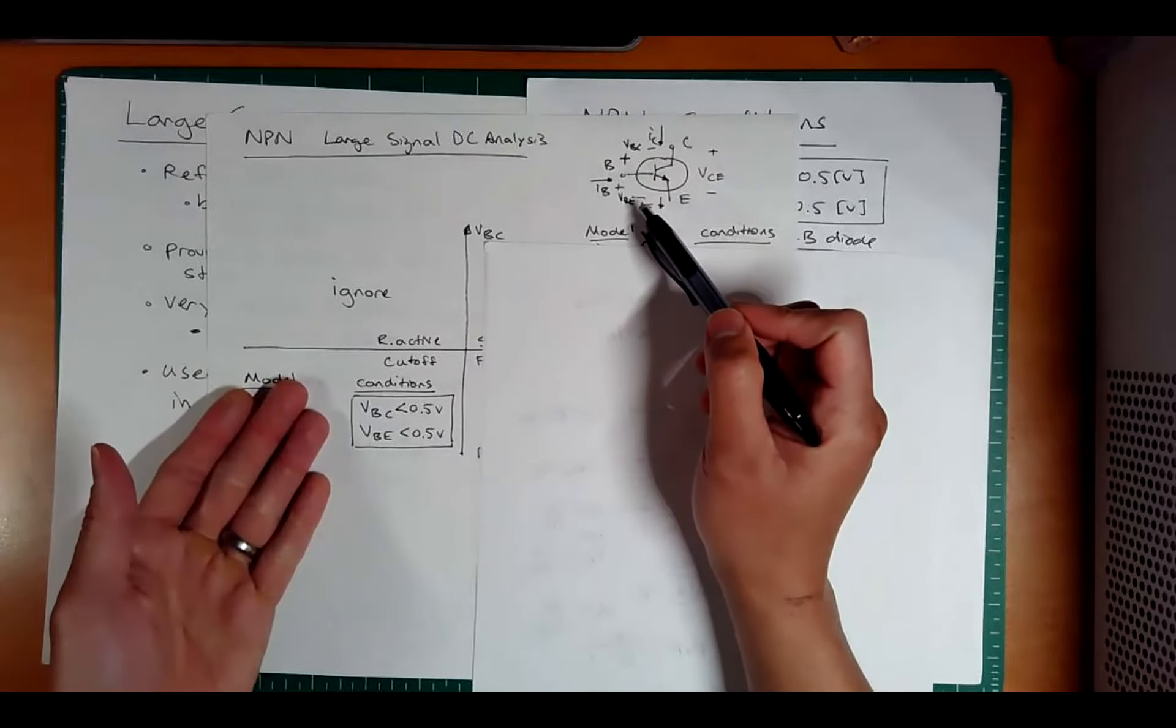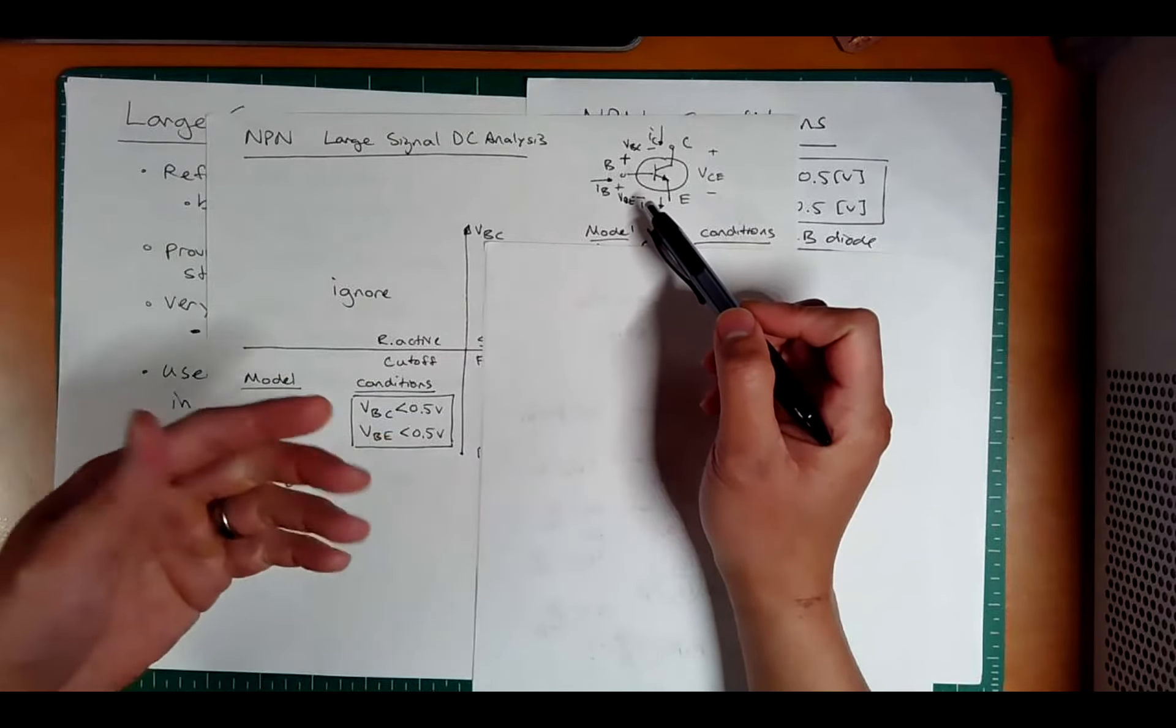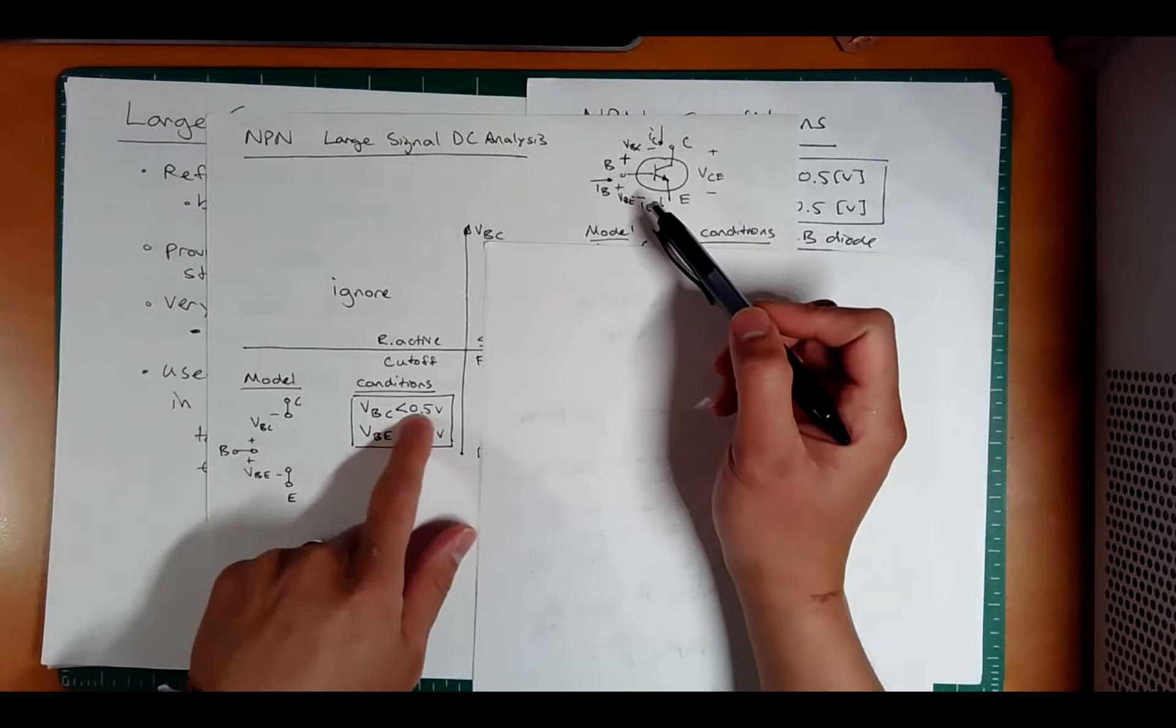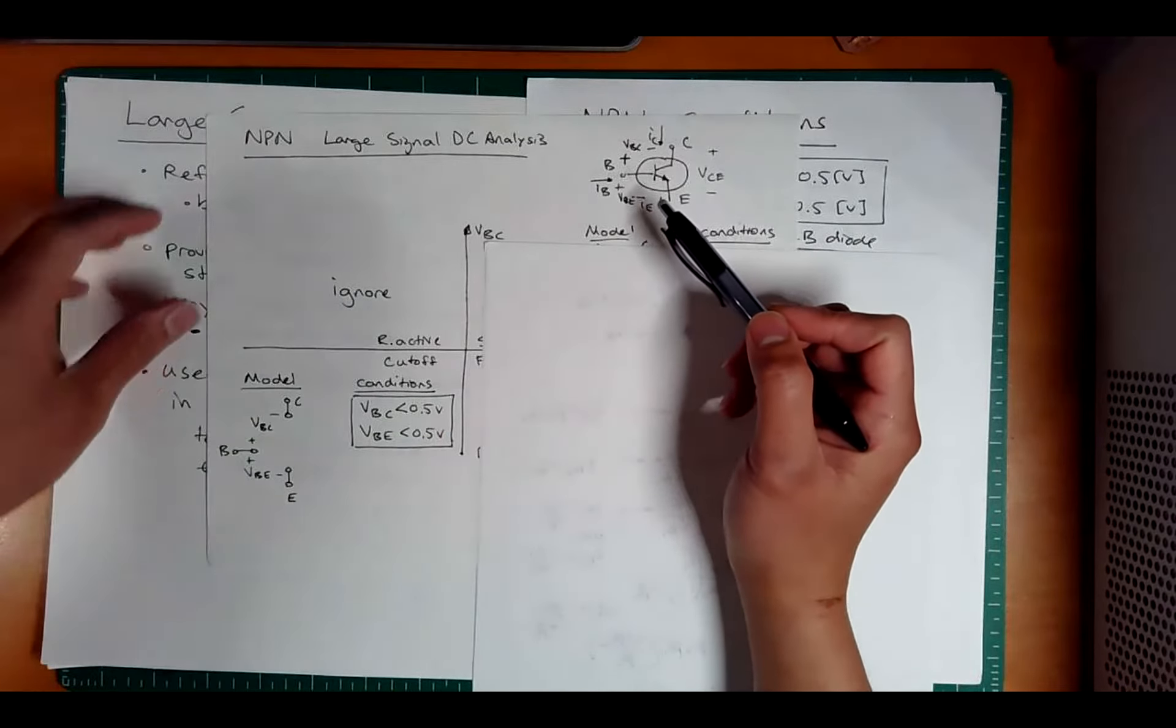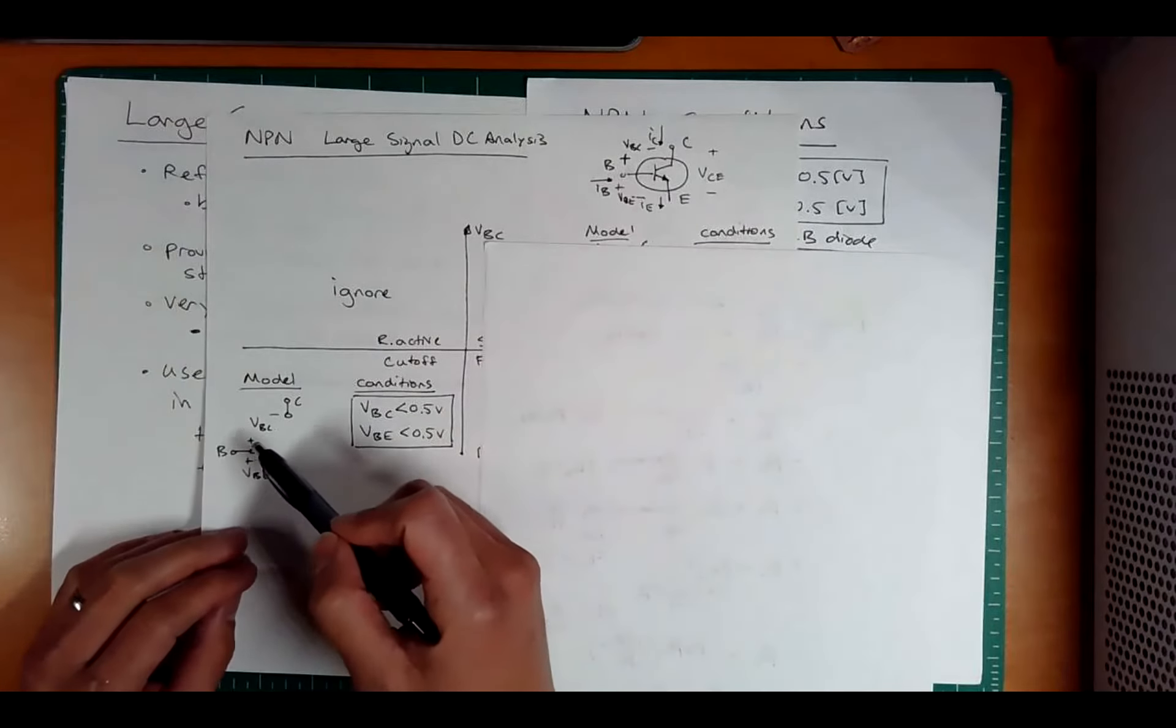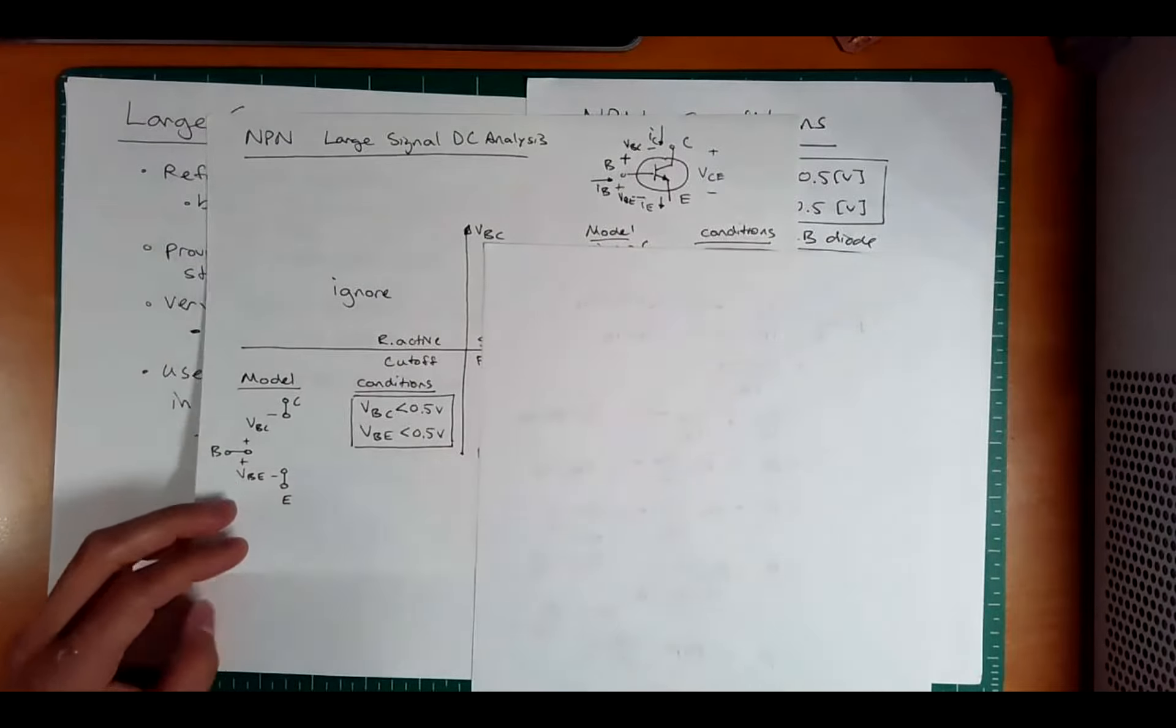So let's go straight to cutoff. Like the diodes in reverse bias, we assume that it's an open circuit. When this is in cutoff, this is behaving like an open circuit. No current can flow. And just like in the diodes, the conditions are when the V is negative. We'll say when the V is less than 0.5, if we want to incorporate some forward bias. It's very similar to the diode conditions.